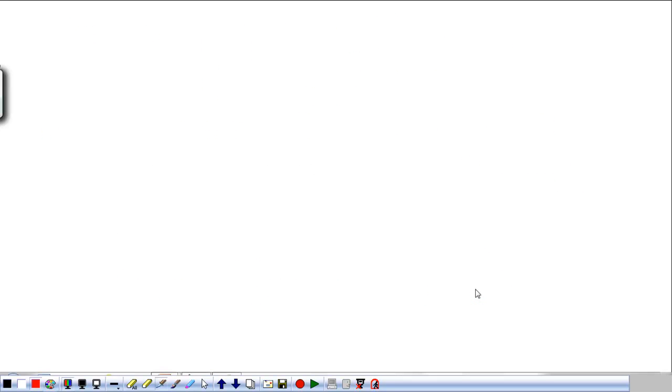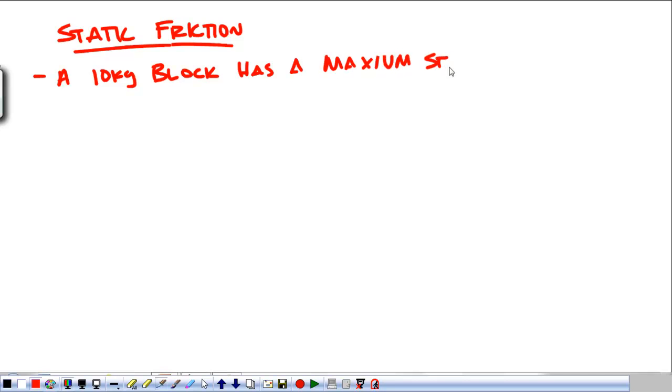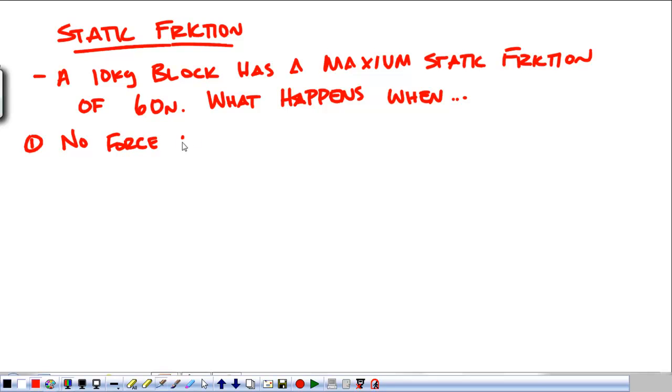If I don't push stronger than static friction, the object's not going to move. These are the basics on friction. So we're going to look first at static friction. Let's look at a little scenario: a 10-kilogram block has a maximum static friction of 60 newtons. What's going to happen in each of these three scenarios? What happens when, scenario one, no force is added to the object?